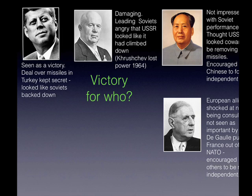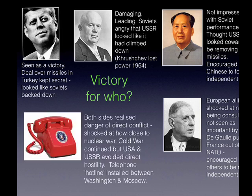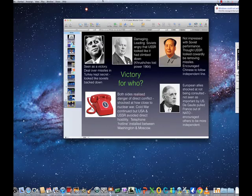European allies of the USA were shocked at not being consulted. France, Britain and others had not been included, and de Gaulle, the president of France, actually pulled France out of NATO and encouraged others in Europe to be more independent of US policy. The crisis could also be seen as a victory for global peace: both sides realised the danger of direct conflict and were shocked at how close they had come to nuclear war. The Cold War continued, but the USA and USSR avoided direct hostility, and a telephone hotline was installed between Washington and Moscow for quick communication between leaders in the event of any future crisis.